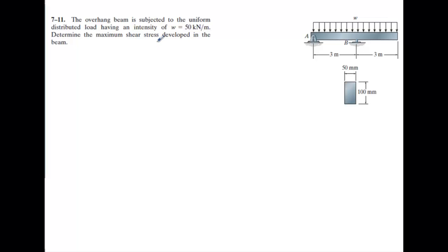This is problem 7-11. You have a uniform loading of 50 kilonewtons per meter. First thing to do is draw yourself a free body diagram. I'll come in here and draw my beam like this. I have a distributed load, so I'll go ahead and draw the forces here.